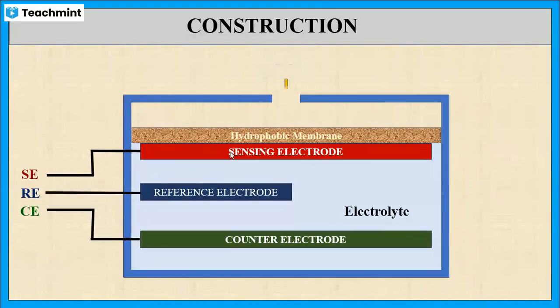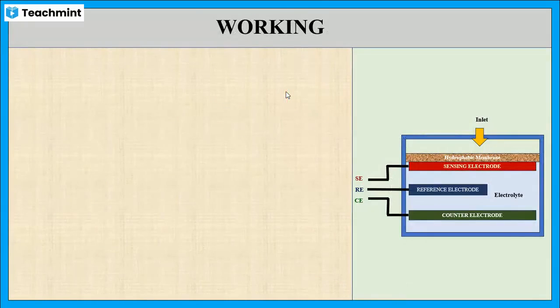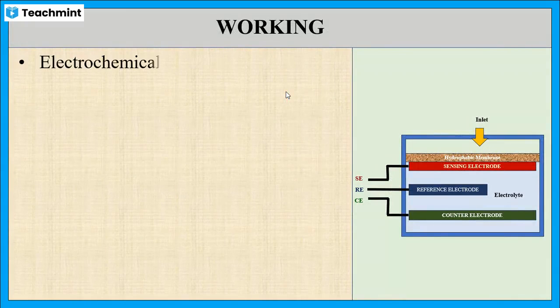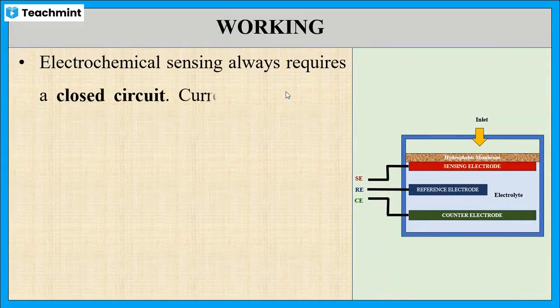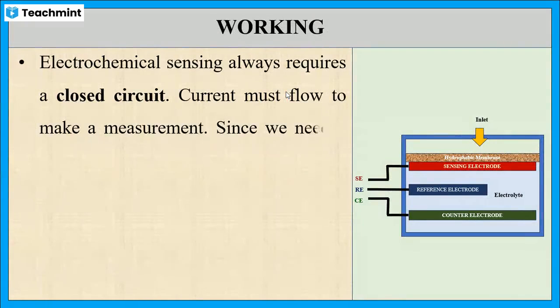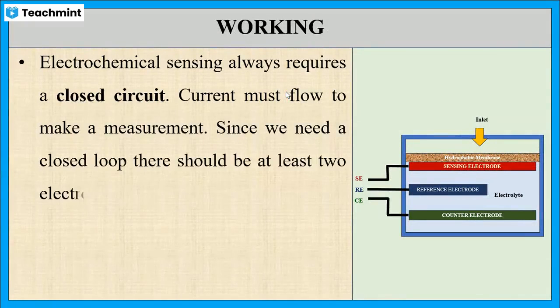And there is an inlet where the analyte sample is to be injected. As we need a closed circuit for the flow of current, the electrochemical sensor needs at least two electrodes which act as transducers.